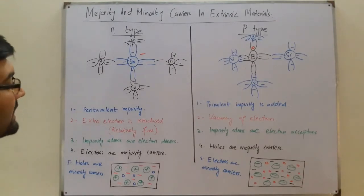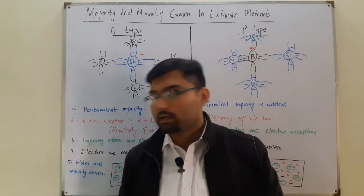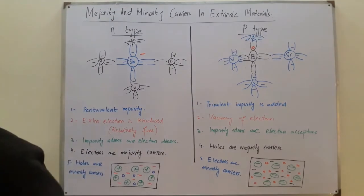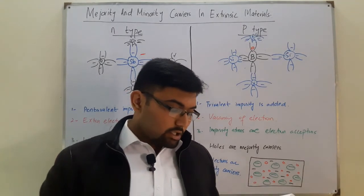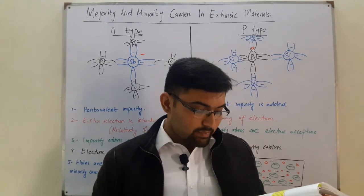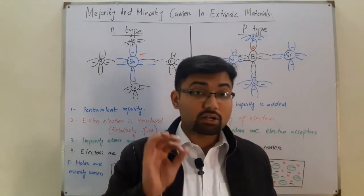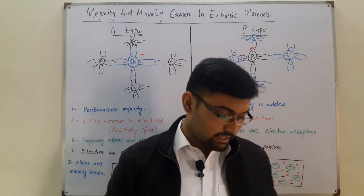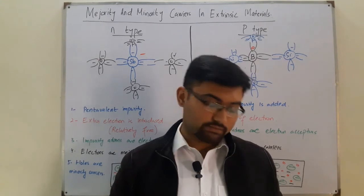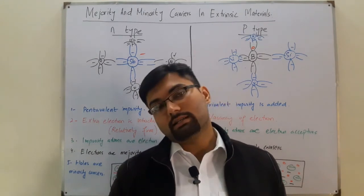This video is very important to understand before going into the next video. Reading from the book: in an n-type material, the number of electrons far outweighs the number of holes, so the electron is called the majority carrier and the hole is the minority carrier. Similarly, for p-type material, the number of holes far outweighs the number of electrons, so the hole is the majority carrier and the electron is the minority carrier.